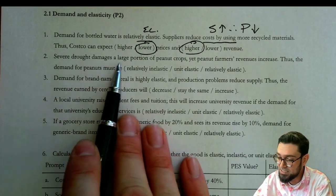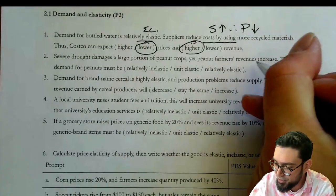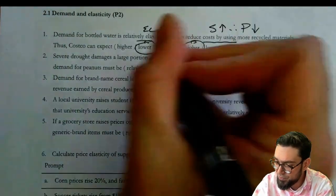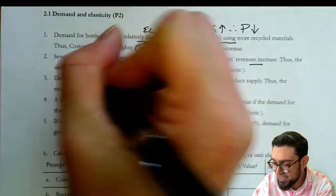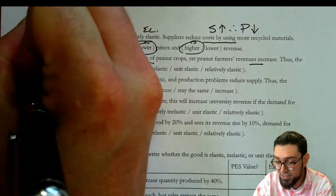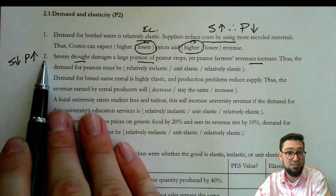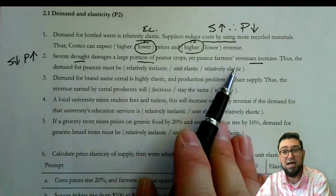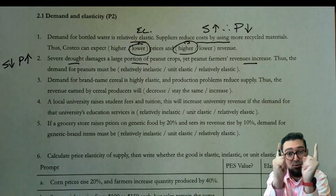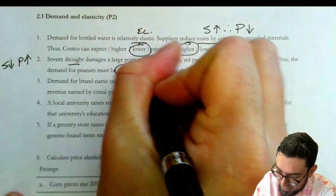A severe drought damages a large portion of peanut crops, and peanut farmers' revenues increase. So it's telling you here revenues are going up. At the same time, something damaged the portion of the peanut crops, so supply decreased, and we know that the price went up at that point when the drought damaged it. So prices had to rise. If we know that revenues are rising and prices are rising — they're moving in the same direction — we know that we must be relatively inelastic.